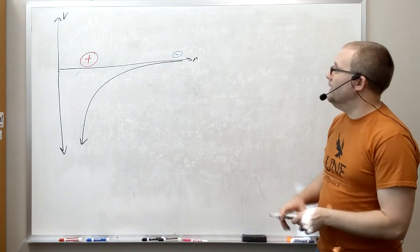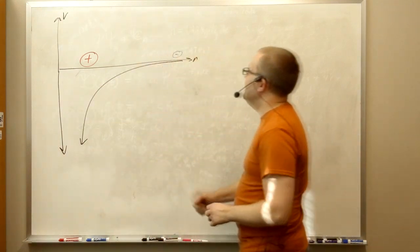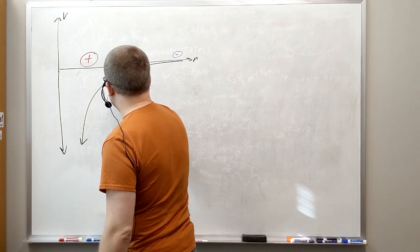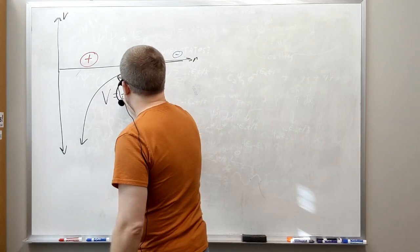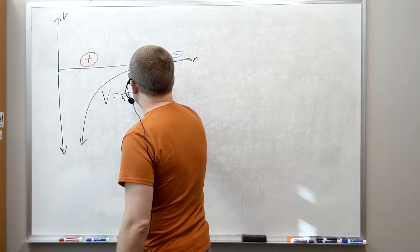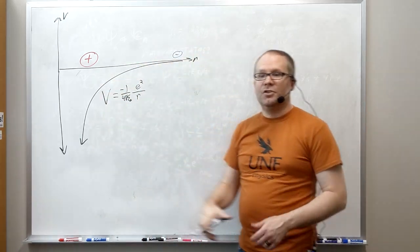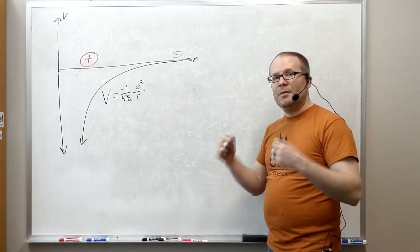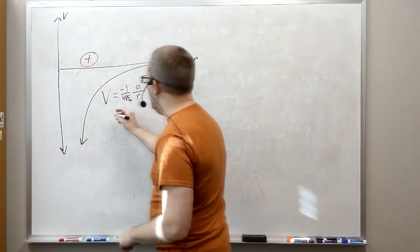The way the model is set up is you have a proton over at r equals zero and you have an electron that's being attracted to it by this attractive potential energy. You've seen it before in physics too. This is just one over four pi epsilon naught, the two charges e squared over r, and there's a negative here so that it is attractive.